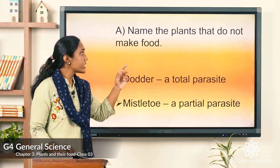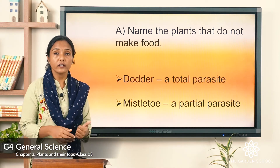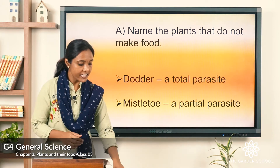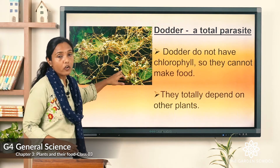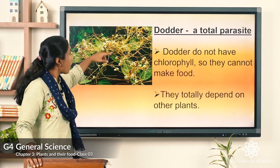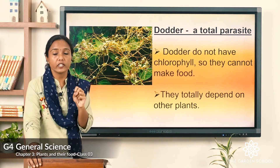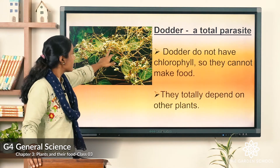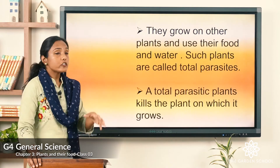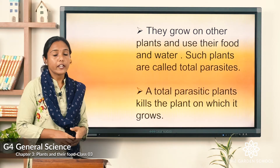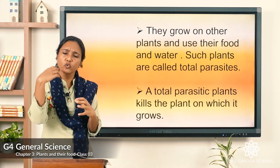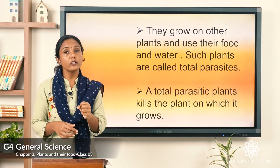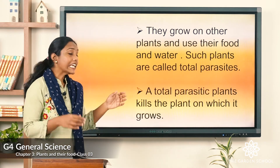Today we are going to learn about two types of plants that do not make food. One is dodder, a total parasite, and the next one is mistletoe, a partial parasite. Dodder does not have chlorophyll, so it cannot make its own food. It totally depends on other plants — it grows on top of other plants and uses their food and water to survive. A total parasitic plant kills the plant on which it grows.